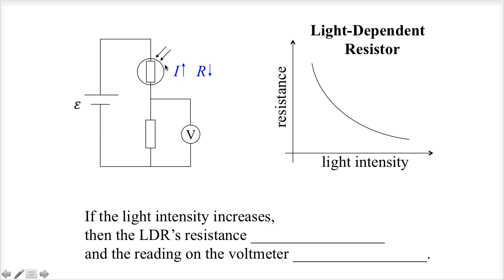And if the top resistor has less resistance, then it consumes less of the EMF, a smaller share. That means the bottom resistor is consuming a bigger share now, and so the voltage on the voltmeter, the reading goes up.